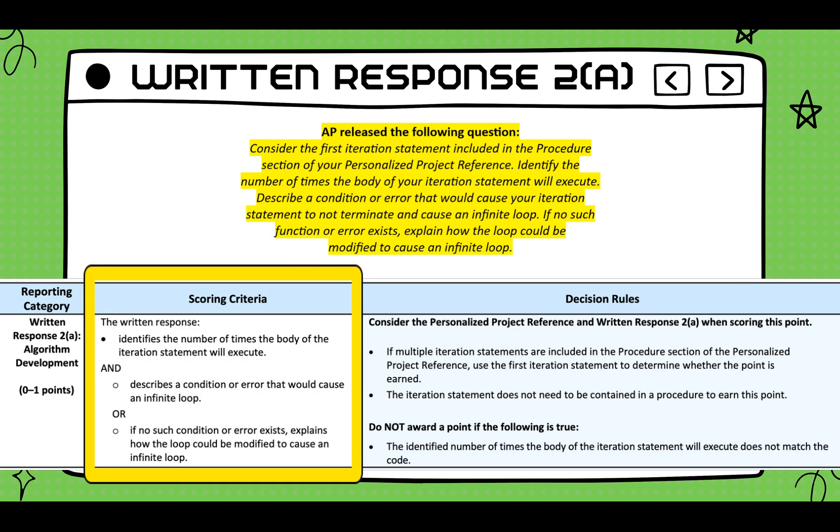To earn a point for this row, AP is expecting you to address two topics. The answer needs to reference the PPR you submitted. First, you need to describe a change you would make to your function that would cause an infinite loop. And second, why did that change cause an infinite loop? The key to this question is understanding what an infinite loop is and how to cause it in your program.